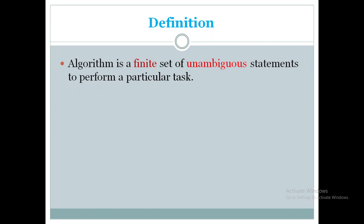An algorithm is a finite set of unambiguous statements to perform a particular task. There are two key terms here: 'finite' — meaning whatever steps you write should be countable — and 'unambiguous' — meaning whatever steps you have written, whether three, five, or a hundred, they should be unique and not duplicated.